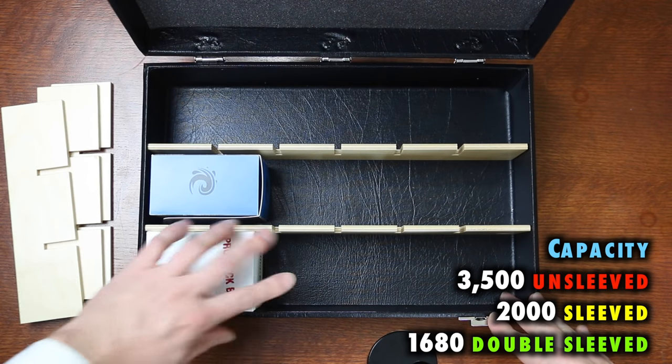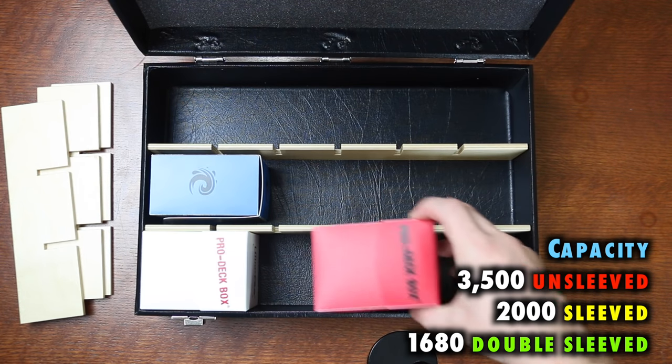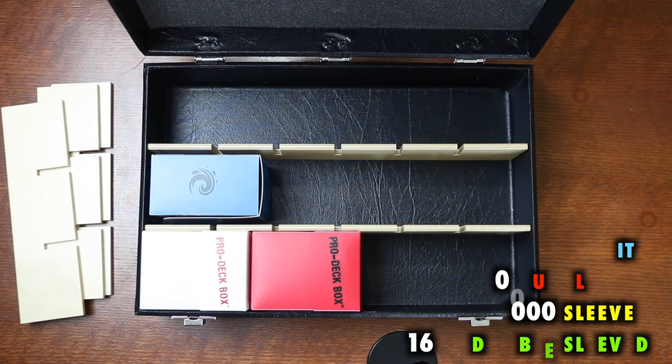Larger deck boxes like an Ultra Pro Tower won't fit, but boxes in the size of the Legion Iconic can be positioned inside.